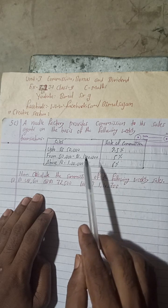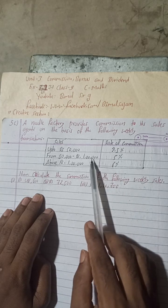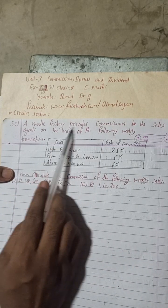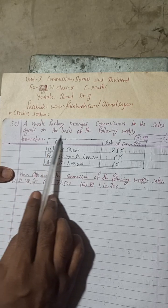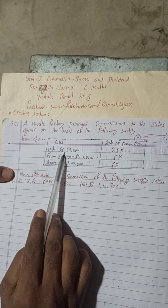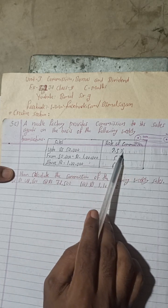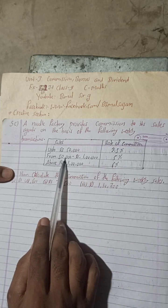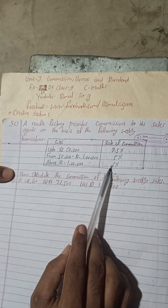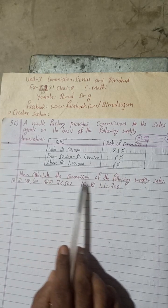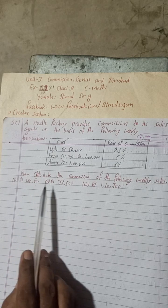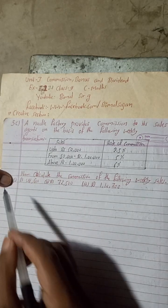Support me with sweet comments and by sharing with your friends. Let's begin the question. A noodle factory provides commission to its sales agents on the basis of the following weekly transactions: sales up to Rs 50,000 — rate of commission is 2.5%; from Rs 50,000 to Rs 1,05,000 — 5%; and above Rs 1,06,000 — 6%. Now calculate the commission for the following weekly sales: number one Rs 48,600, number two Rs 72,500.